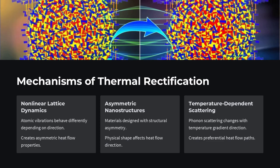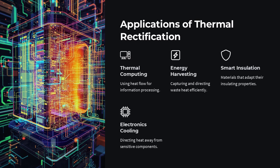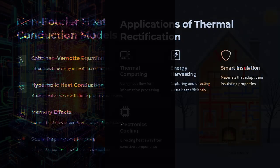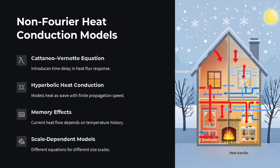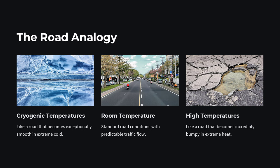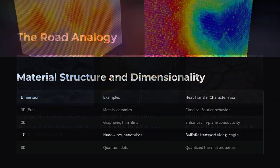Then there are timescales. When heat is introduced very rapidly, on the order of picoseconds — trillions of a second — there isn't enough time for phonons to scatter and equilibrate. Instead, the energy propagates in thermal waves, a phenomenon called second sound. Imagine clapping your hands and feeling the heat travel as a pulse, not a slow warm-up. This has been observed in materials like solid helium and even engineered superlattices. Here, heat behaves more like a sound wave than a random walk, completely at odds with Fourier's law.